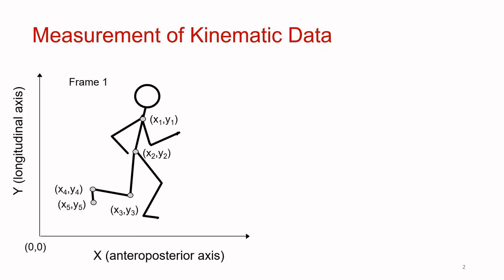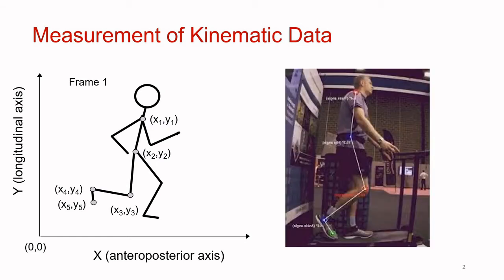Here we see an illustration of some kinematic data being measured from a person in motion. The stick figure is representing the person, and the grey dots are representing measurements of the location in space of various anatomical landmarks on the body. The grey dots potentially represent markers used by a motion tracking system to measure body position in space. Here we see a picture of a motion tracking system being used to record sagittal plane kinematics during locomotion. The coloured lights are the tracking markers. This is the system you'll be seeing in action during the running analysis lab later in the semester.